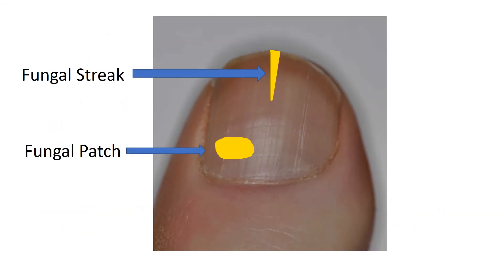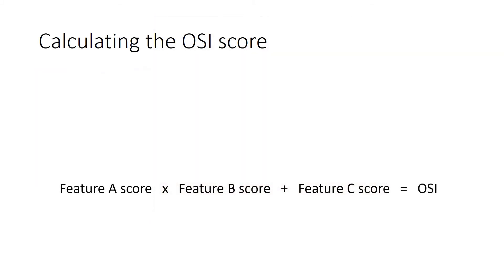A fungal streak is a long thin stripe of fungus — sometimes called nail spikes — which runs proximally from the nail edge towards the matrix, and is commonly seen in early onychomycosis. A fungal patch is an area of fungal infection under the nail that is not continuous with the free edge — best described as an island of fungus in a sea of nail plate, an entirely isolated area of infection. The presence of either or both of these generally indicates a poorer prognosis, and if present they score 10 points.